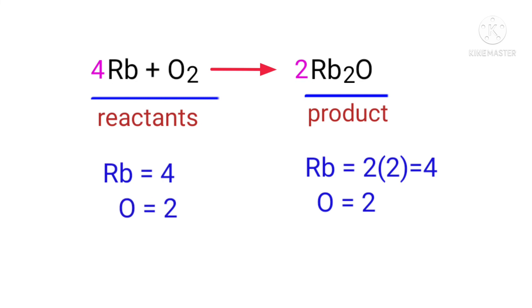The equation is now balanced. There are four Rubidium atoms and two Oxygen atoms on both sides.